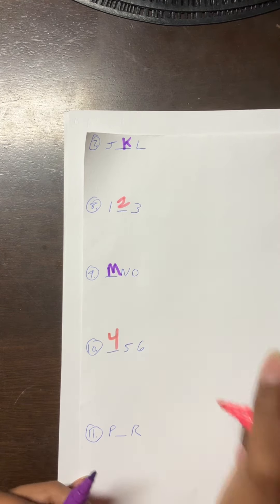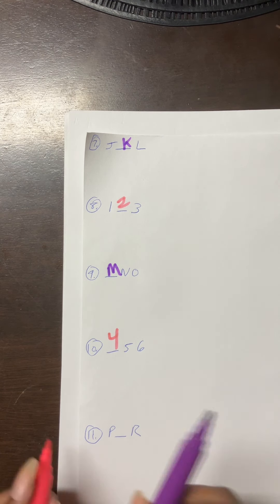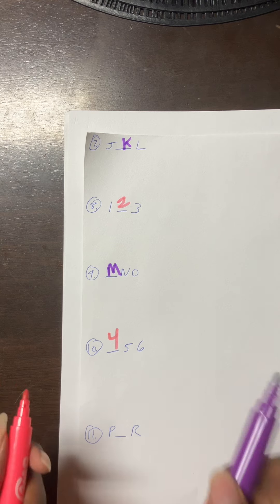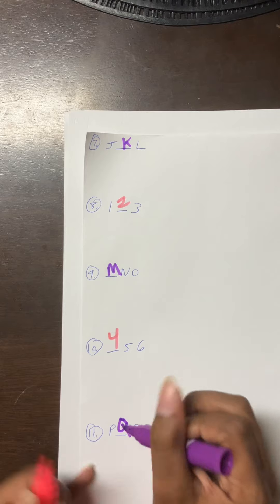And the last one: P blank R. So it's A B C D E F G H I J K L M N O P Q. So we're gonna write Q. And that's the last one.